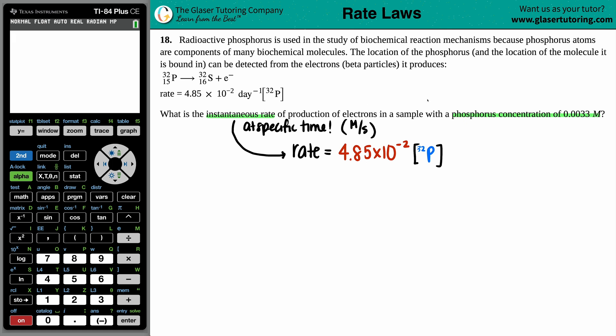And we have the phosphorus concentration of 0.0033 molarity. So inside here is going 0.0033 molarity. Now here, let's see. Rate equals that rate constant 4.85 times 10 to the negative second times the phosphorus, which is the 0.0033. Can't get any better than that, right?